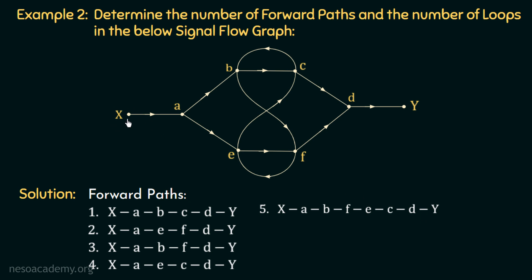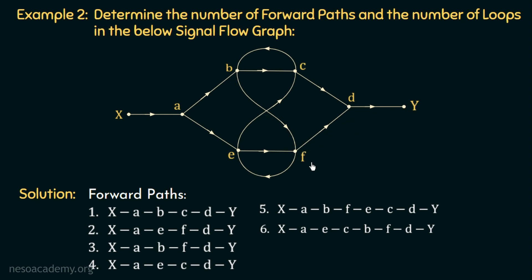Similarly, starting from input node X, we move to A, then to E, then to C, then to B, then to F, then to D, and finally to the output node. This is the sixth forward path: X, A, E, C, B, F, D, Y. No node is counted more than once, so this is also a valid forward path. Therefore, the total number of forward paths in this signal flow graph is equal to 6.